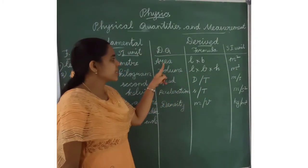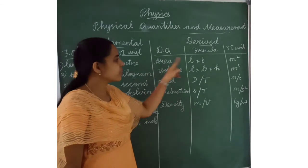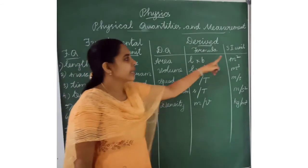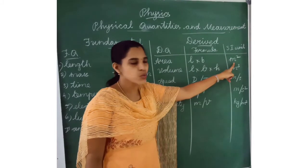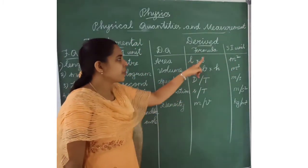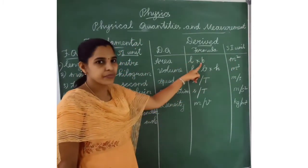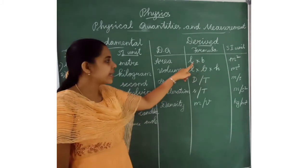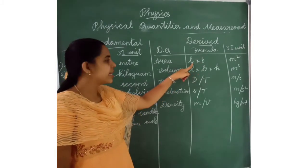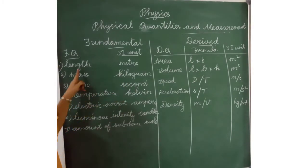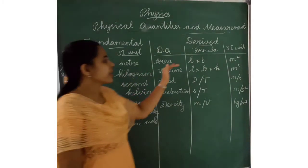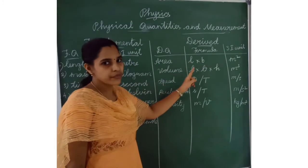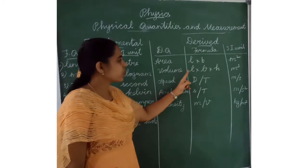The derived quantity area has the formula L into B, and its SI unit is meter square. Here, L stands for length, which is the fundamental quantity. So in all derived quantities, at least one fundamental quantity will be present in the formula.